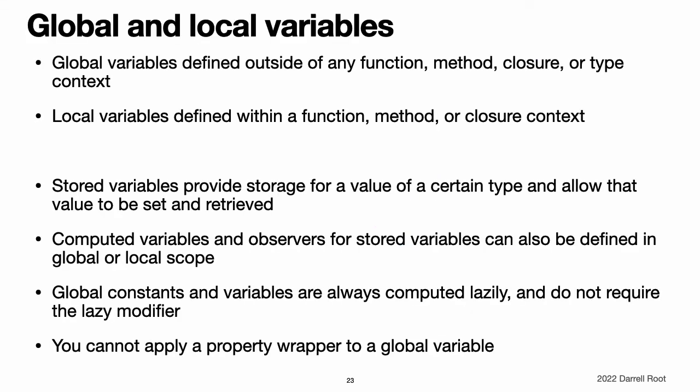Global and local variables: the capabilities described above for computing and observing properties are also available to global variables and local variables. Global variables are variables defined outside of any function, method, closure, or type context. Local variables are variables defined within a function, method, or closure context. The global and local variables encountered in previous chapters have all been stored variables. Stored variables, like stored properties, provide storage for a value of a certain type and allow that value to be set and retrieved.